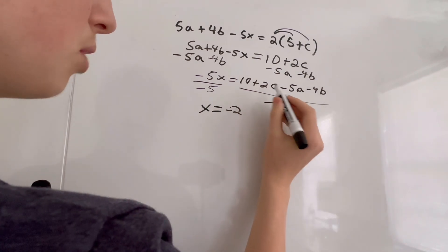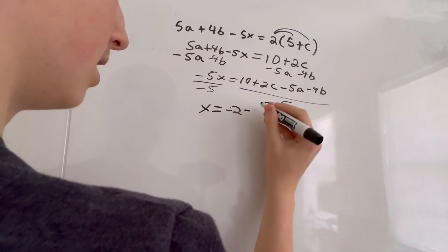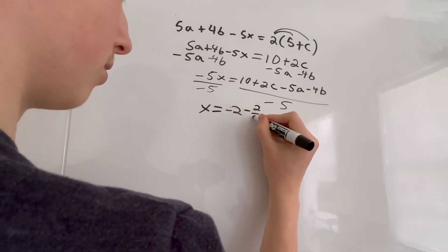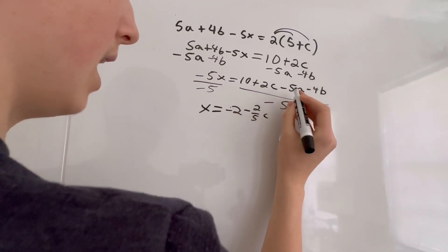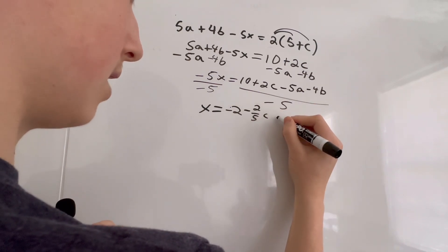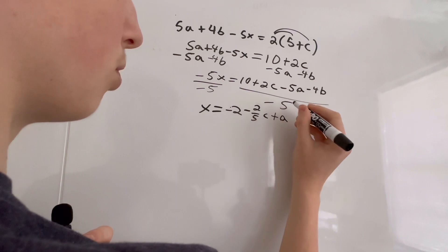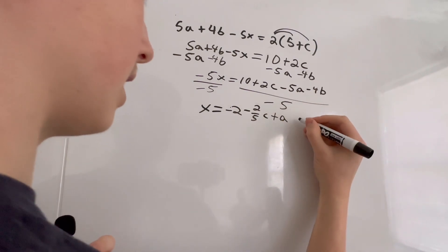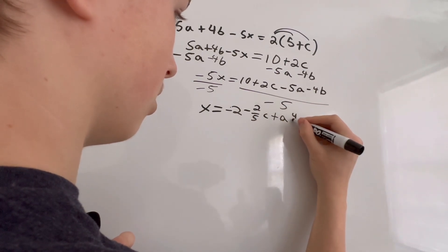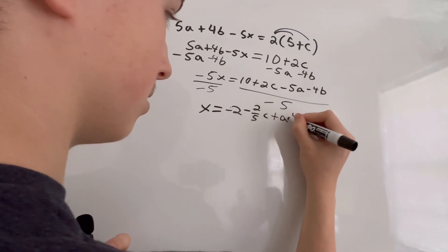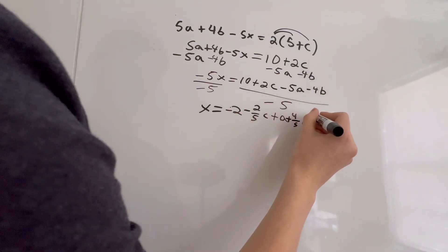And then 2 over negative 5 is negative 2 over 5C. And then negative 5A over negative 5 is just A, positive A. And then negative 4B over negative 5 is 4 over 5B. And that would be our answer.